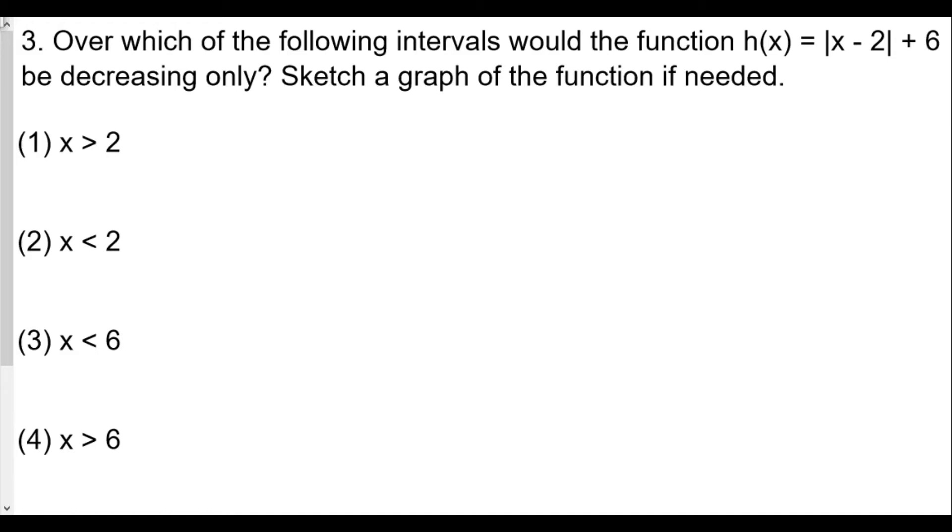We see here x minus 2 which means shift right by 2, because inside the absolute value, whatever number we see is the opposite. We see minus 2, it really means shift to the right. For the plus 6 on the outside, that would mean shift up six units.